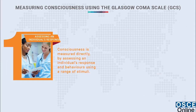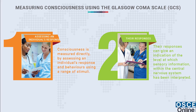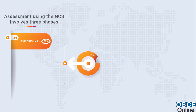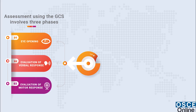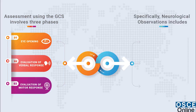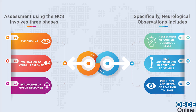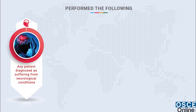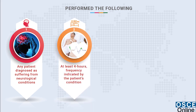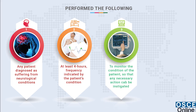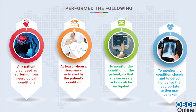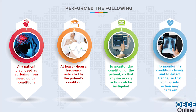Consciousness is measured directly by assessing an individual's responses and behaviours using a range of stimuli. Their response can give an indication of the level at which sensory information within the central nervous system has been interpreted. Neurological observations specifically include: eye opening; evaluation of verbal response; evaluation of motor response; assessment of current conscious level; limb assessments in response to stimuli; and pupil size and speed of reaction to light. These observations should be performed at least every four hours, or as indicated by the patient's condition, to monitor trends and enable appropriate action.